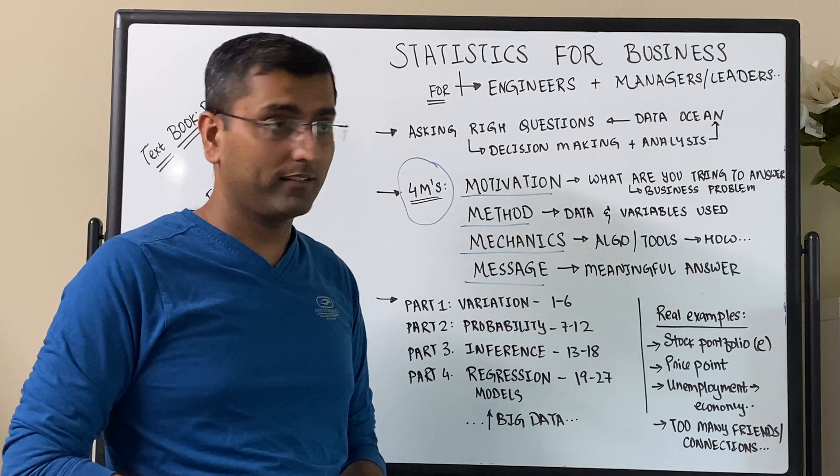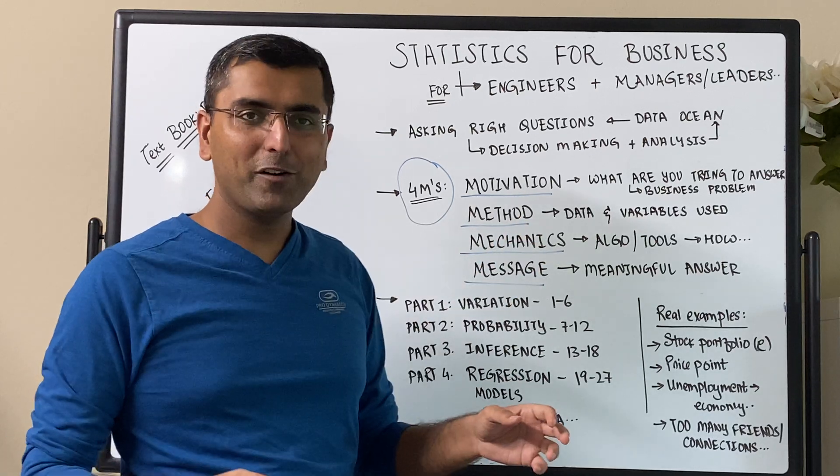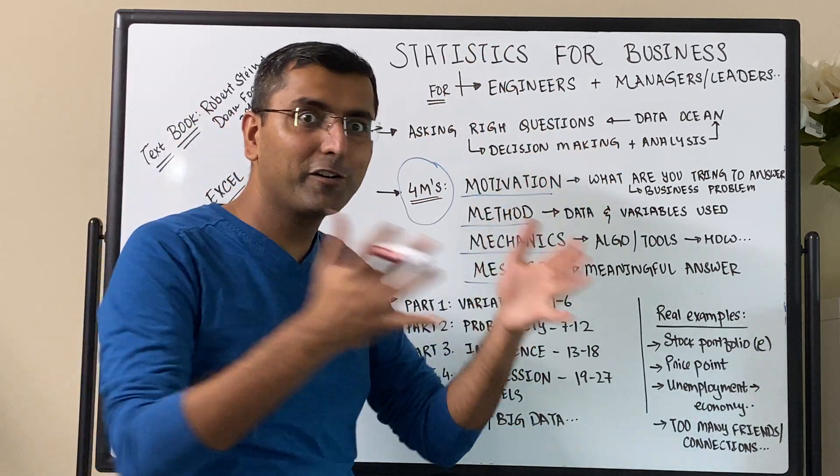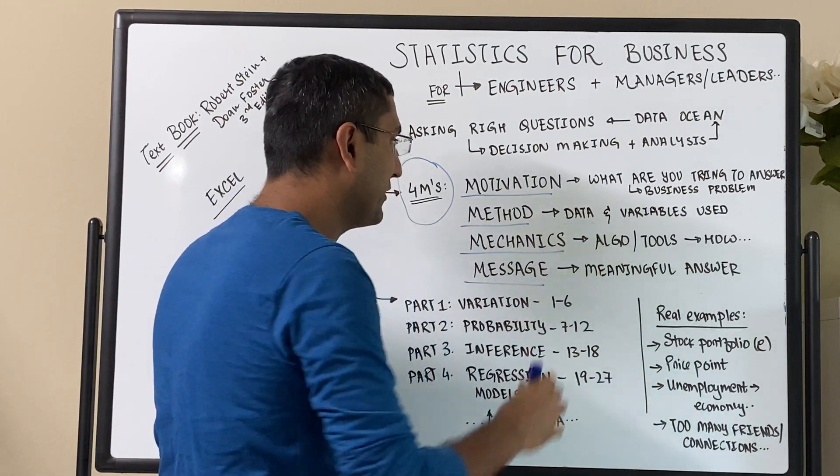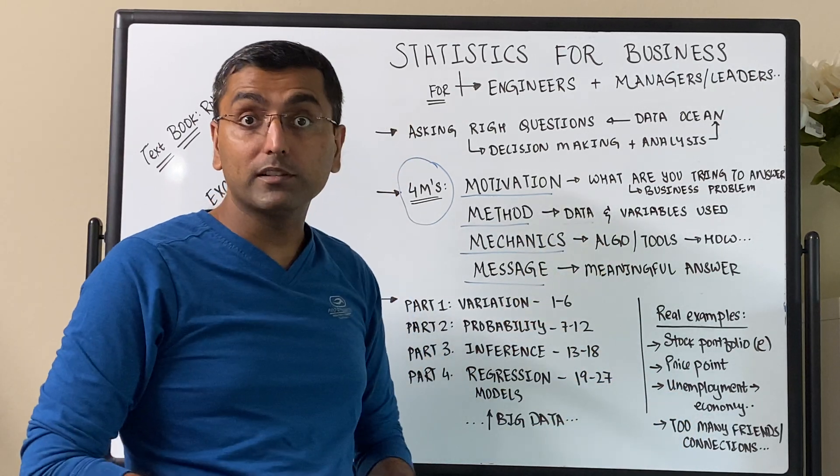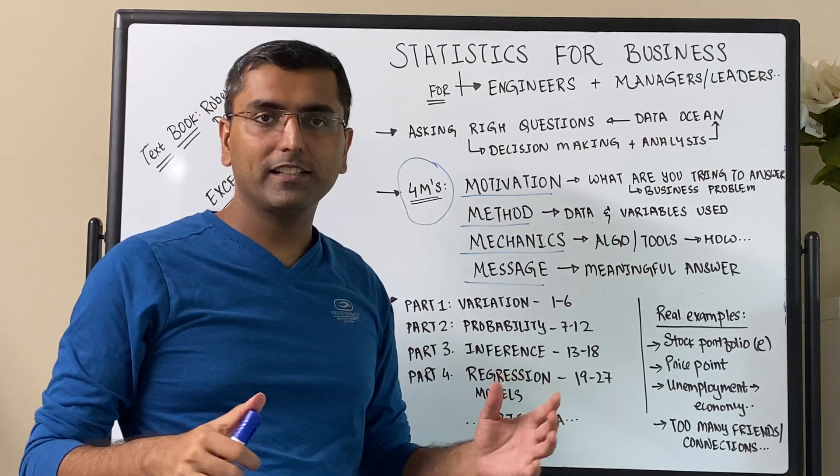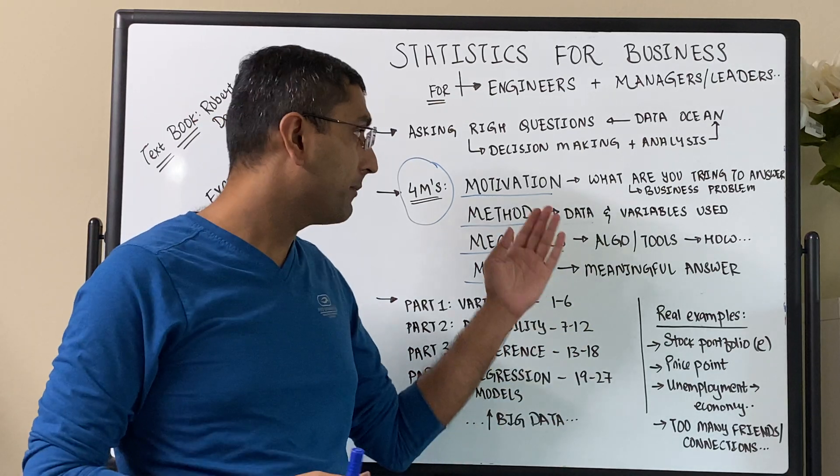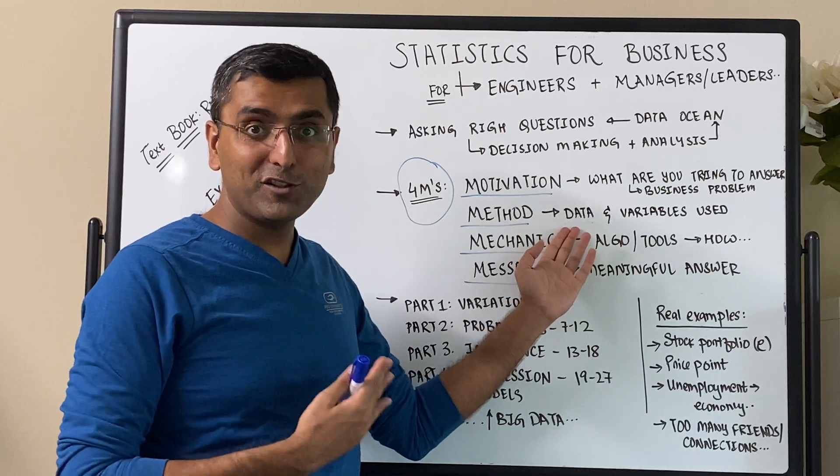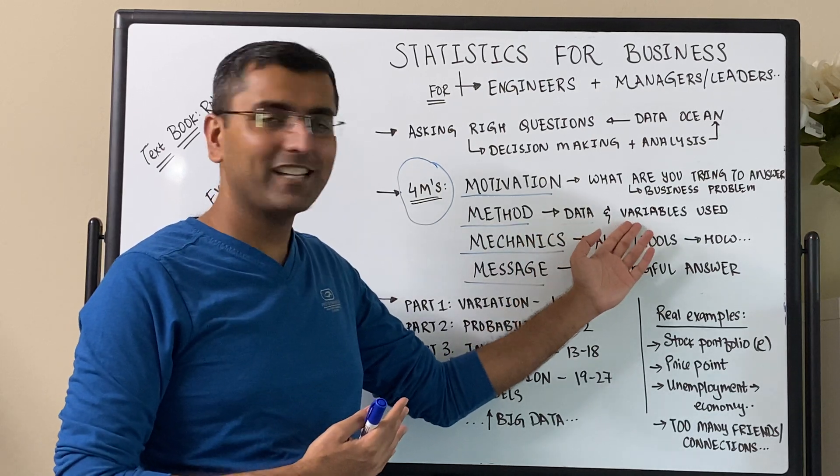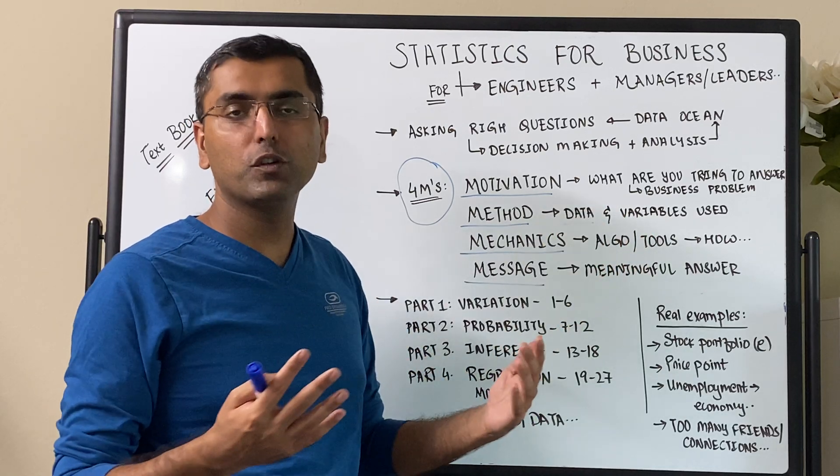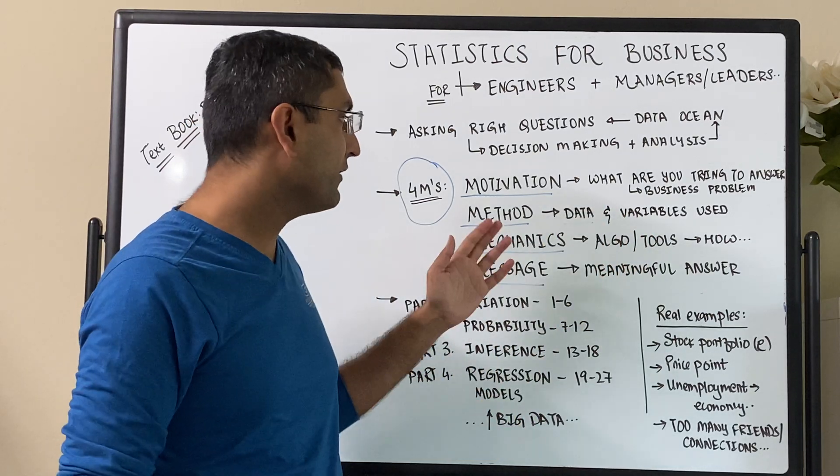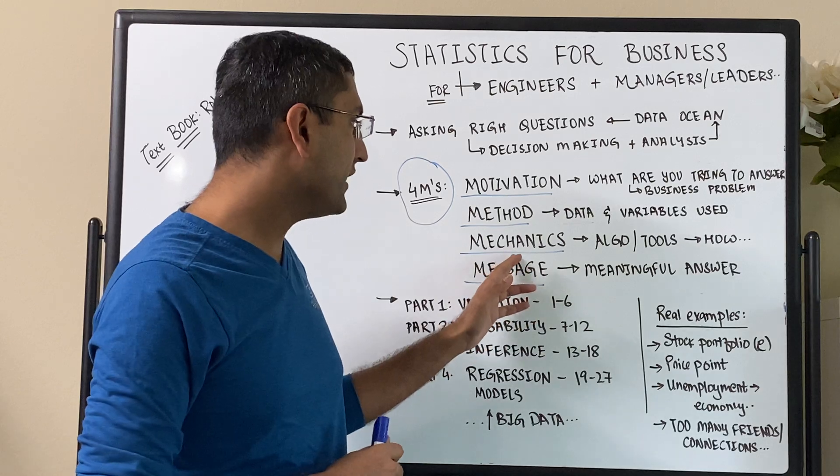Once you know the motivation, then you can define the method. The method is basically, for that problem space, where are you going to go look for the data. What method is all about data and what are the variables that you're going to use. There are different types of variables, and in the upcoming chapters we learn about importance of clean data, importance of understanding what variables are and how do we use those data variables so that we can make the right decision.